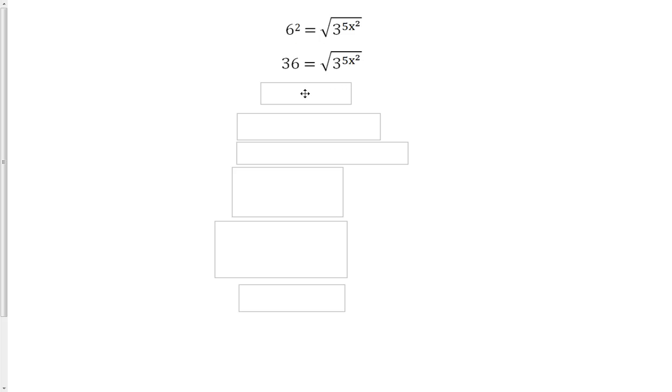But since we have the square root of this entire right side, we can go ahead and square both sides to get rid of that root. So if we square the left, we're going to be left with the constant 1296. Just punch 36 squared in your calculator. And on the right, we'll have the inner part, 3 to the 5x squared, remaining.